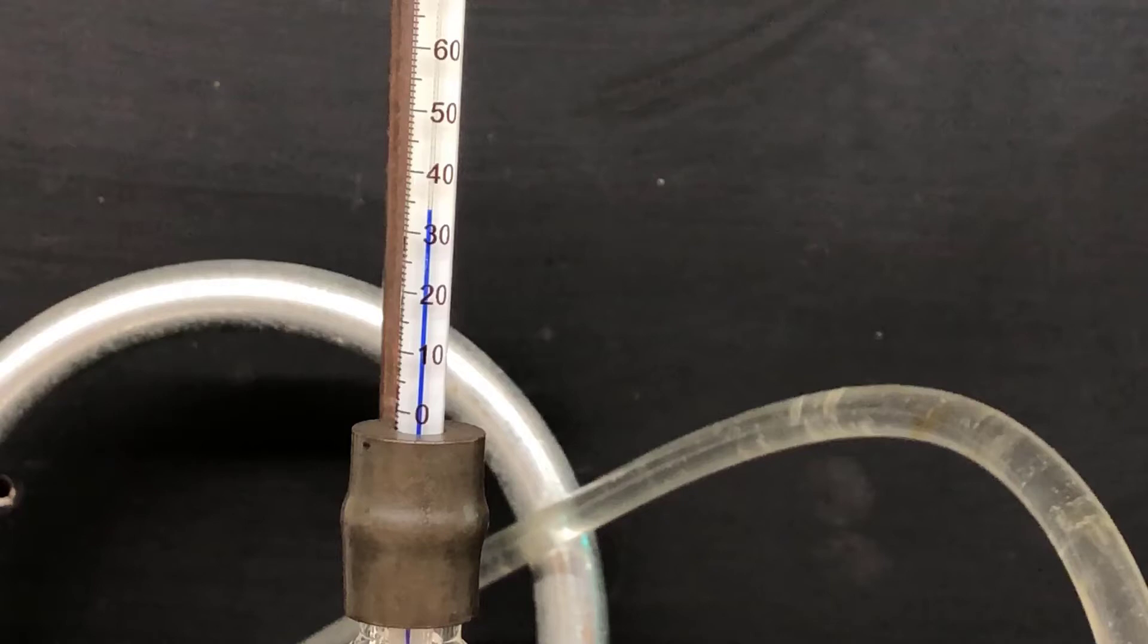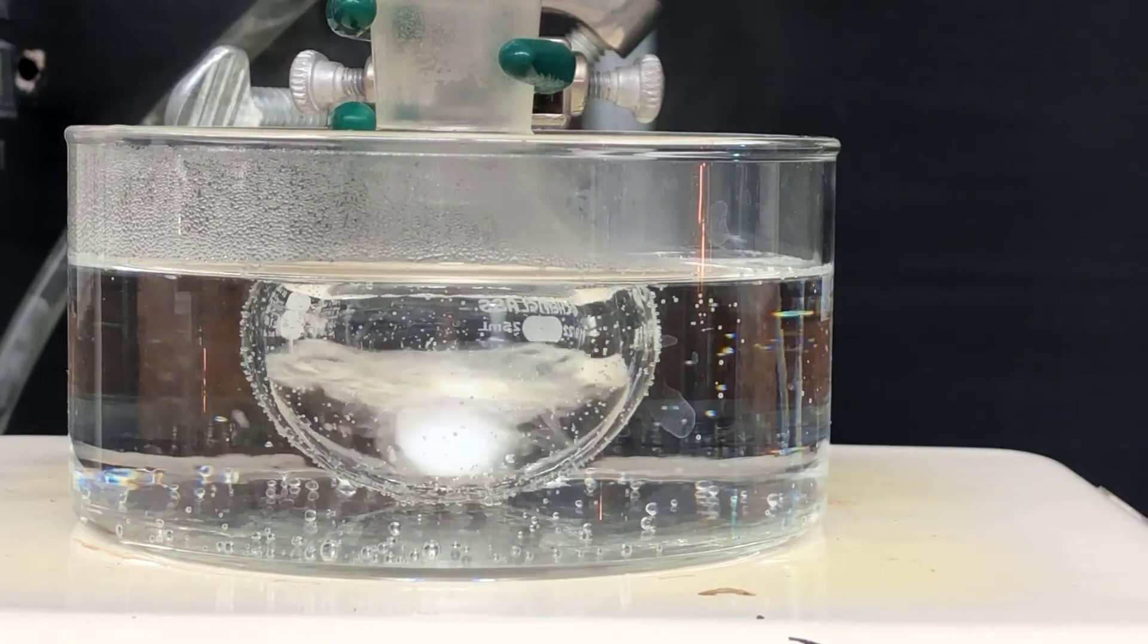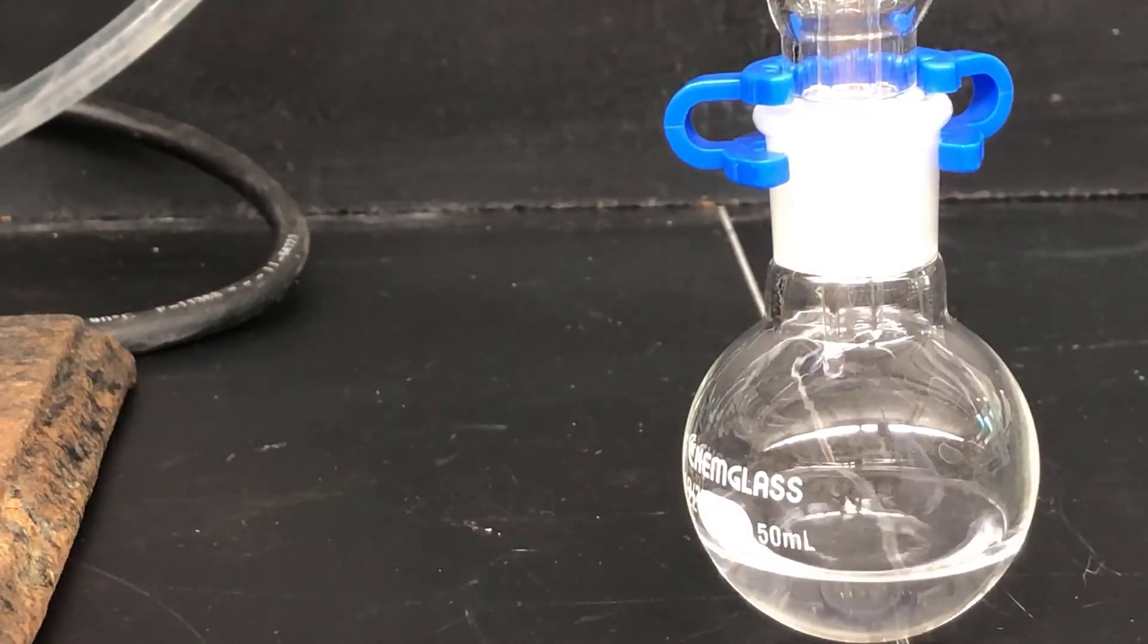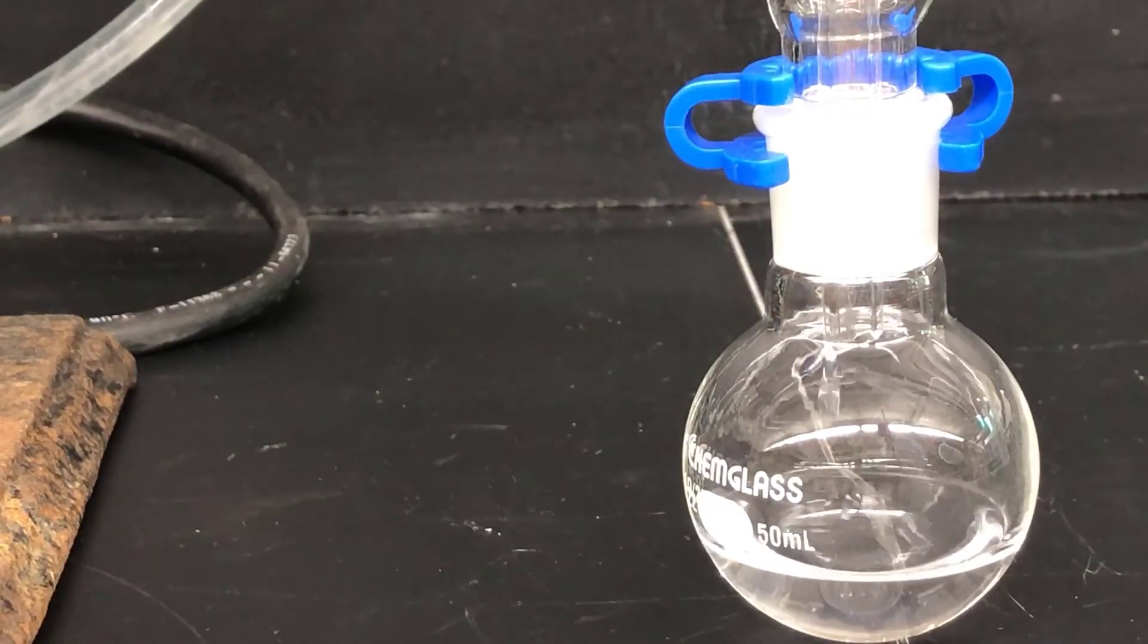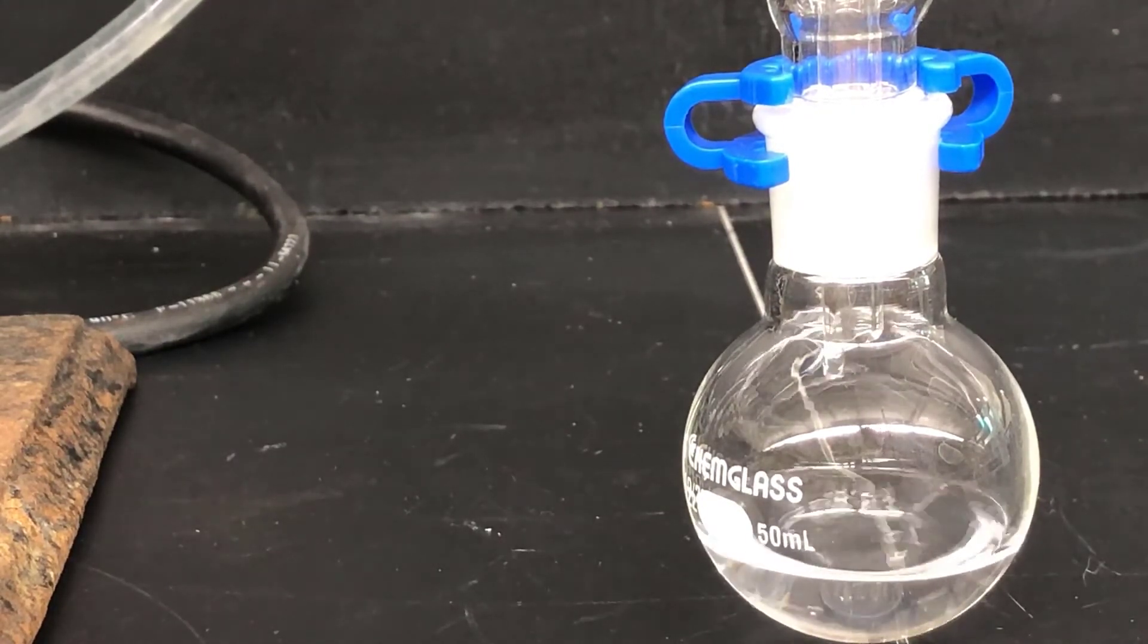Here the solvent has started distilling at about 34 degrees. Here I'm showing a side view of the distillation in progress, and here I'm showing the solvent dripping into the collection vessel. A drip rate of one to two drops per second is just about right for distillation.